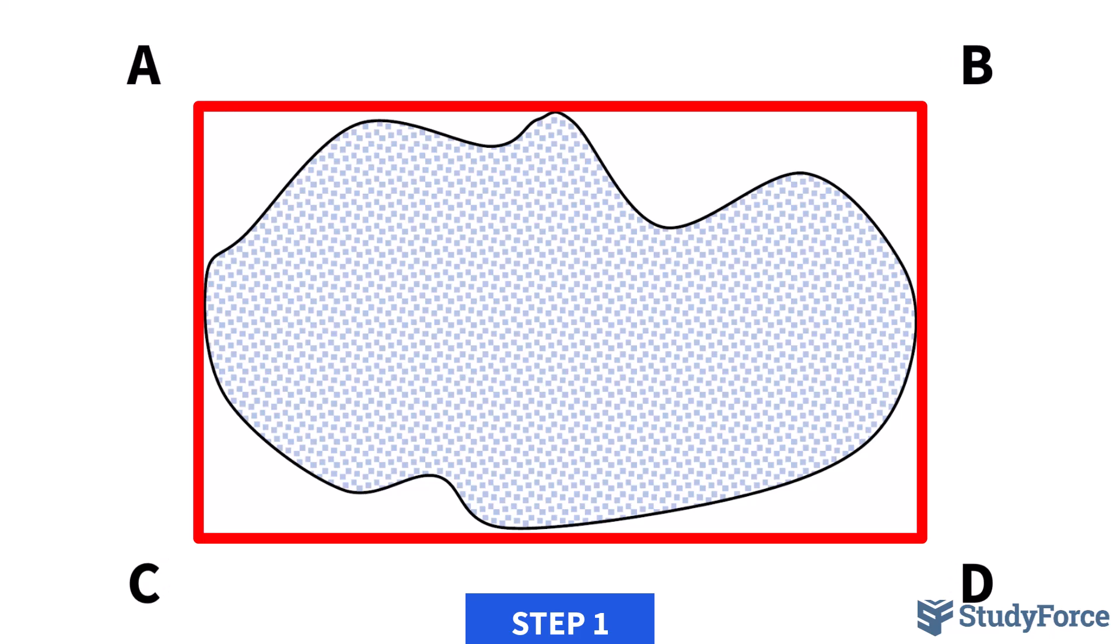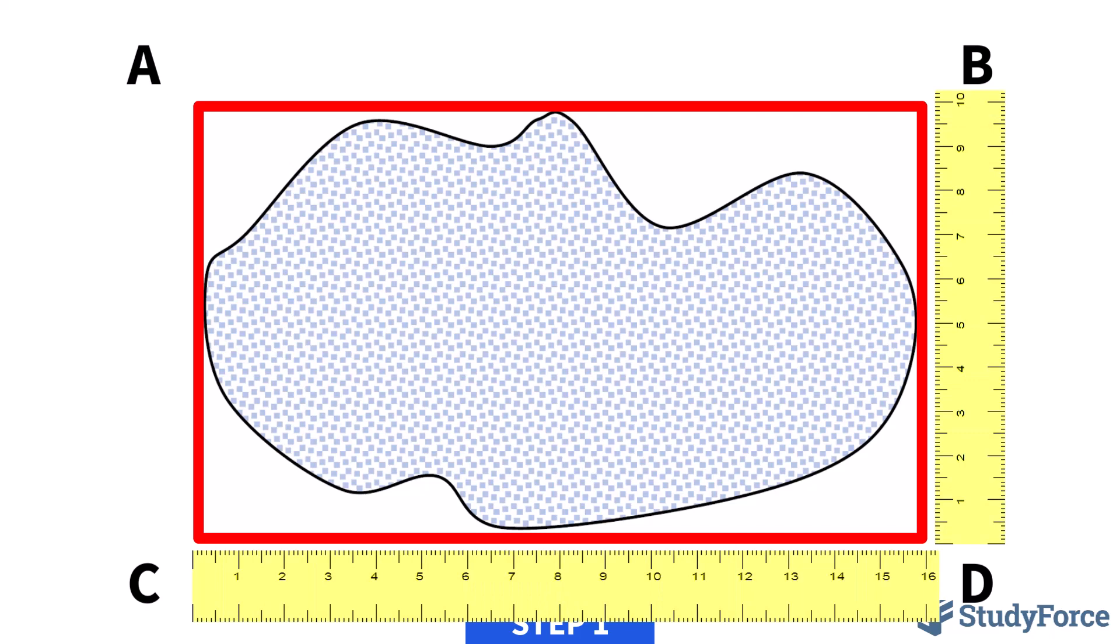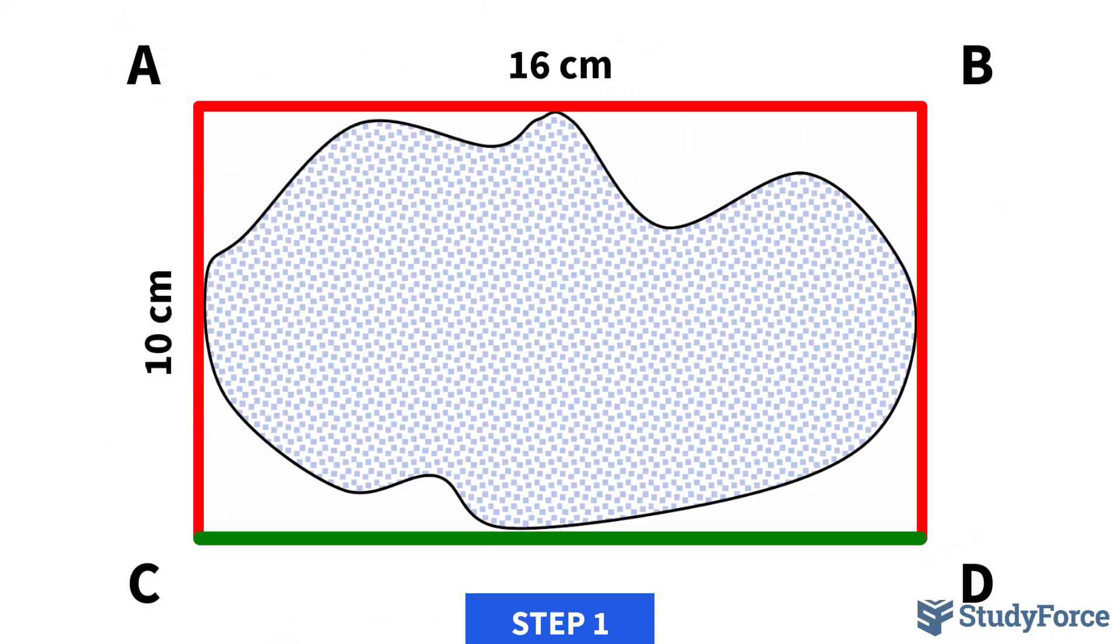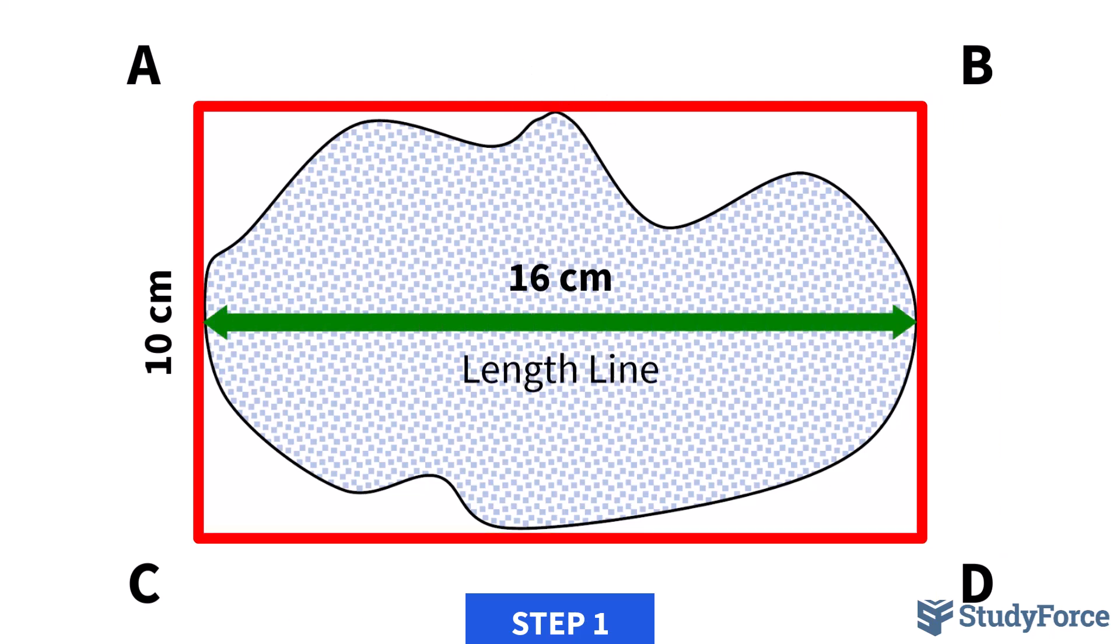Label the vertices of the rectangle A through D. Measure the length and the width of the enclosing rectangle to obtain the necessary dimensions. The length of the line AB or CD will represent the distance of the length line or the broadest part of the land.